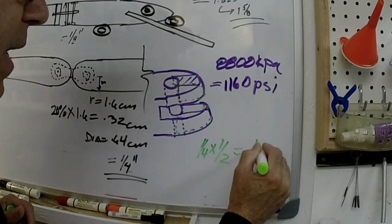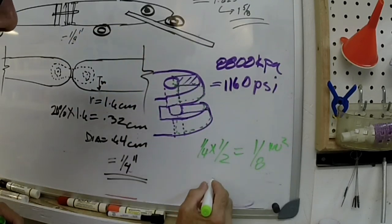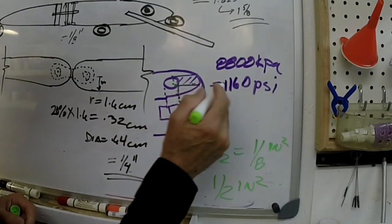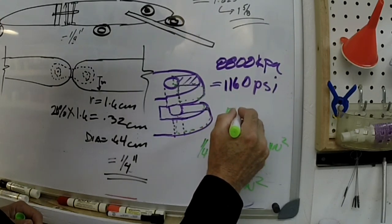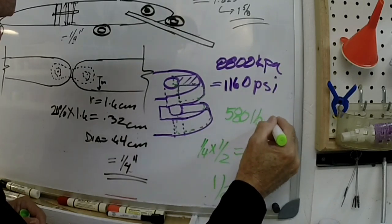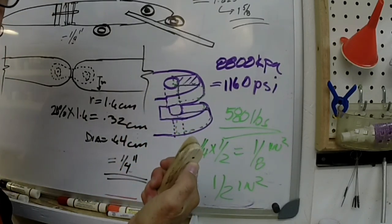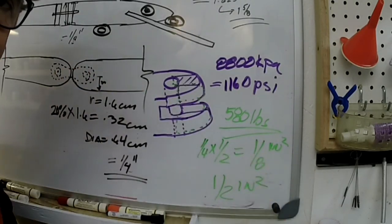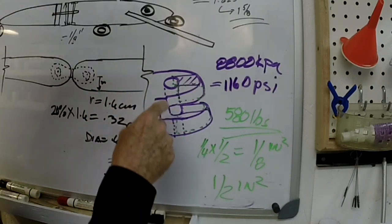So if you've got a quarter inch times a half an inch, you end up with an eighth of an inch squared. And since there's four of them, four times an eighth is a half. Half a square inch. So if you multiply 1,160 times a half, you end up with 580 pounds. So this wood loaded in this way can handle 580 pounds. Now if I wanted to be more conservative and cut that in half, I'd still have a substantial amount of strength here, probably more than those little pins can handle.